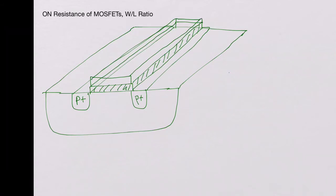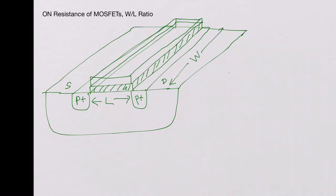In this view we cannot see the source region anymore, but that's fine. Now if you look at the pMOS device, this dimension is the channel length and this dimension is the width. This is the n-well sitting in the big p-substrate. The current flows from source to drain.